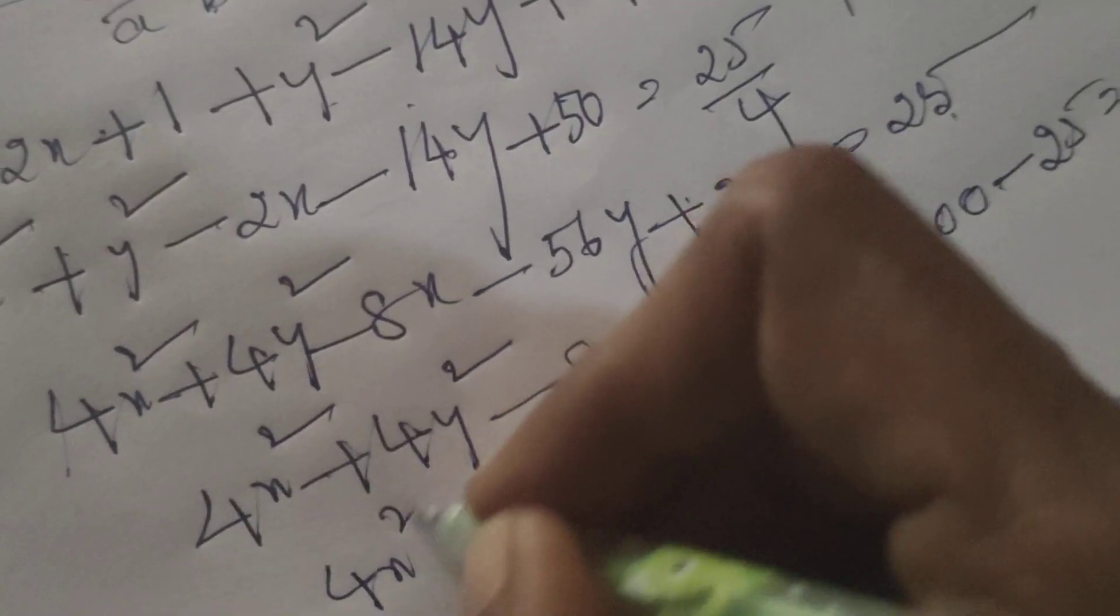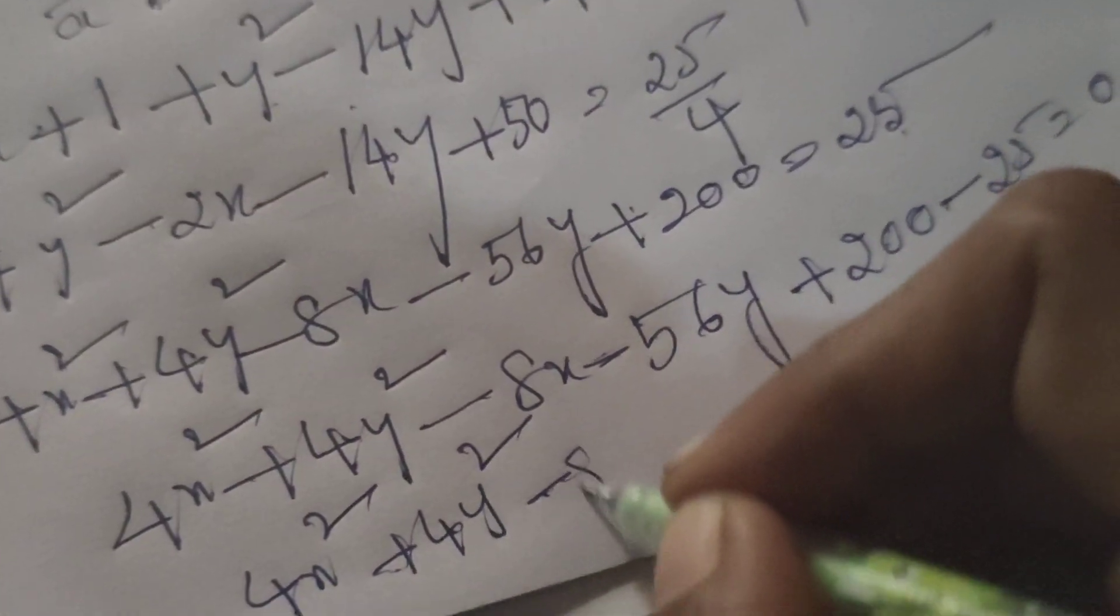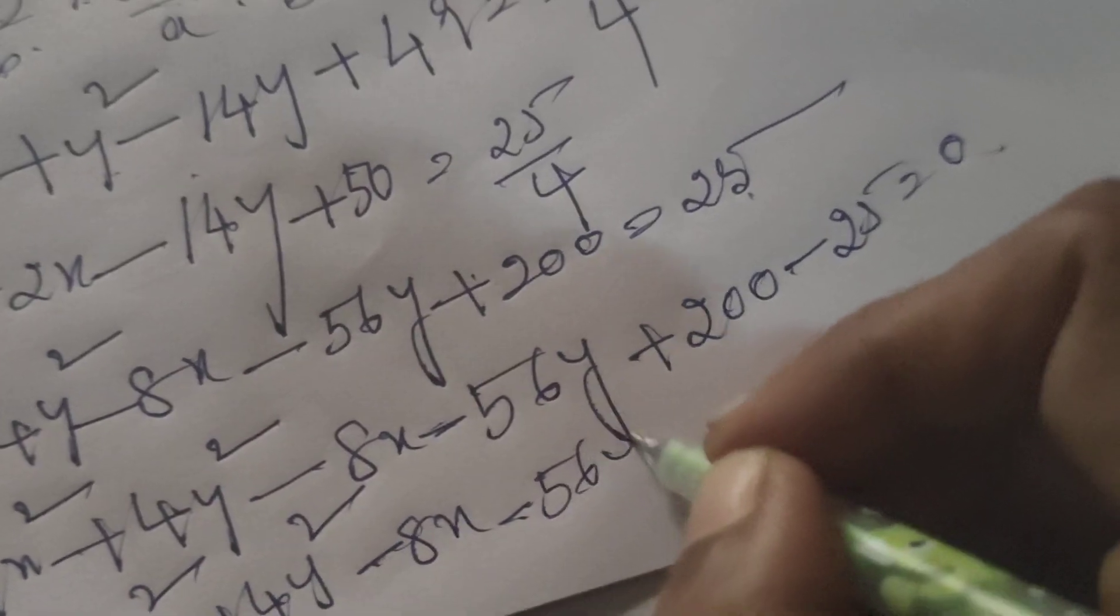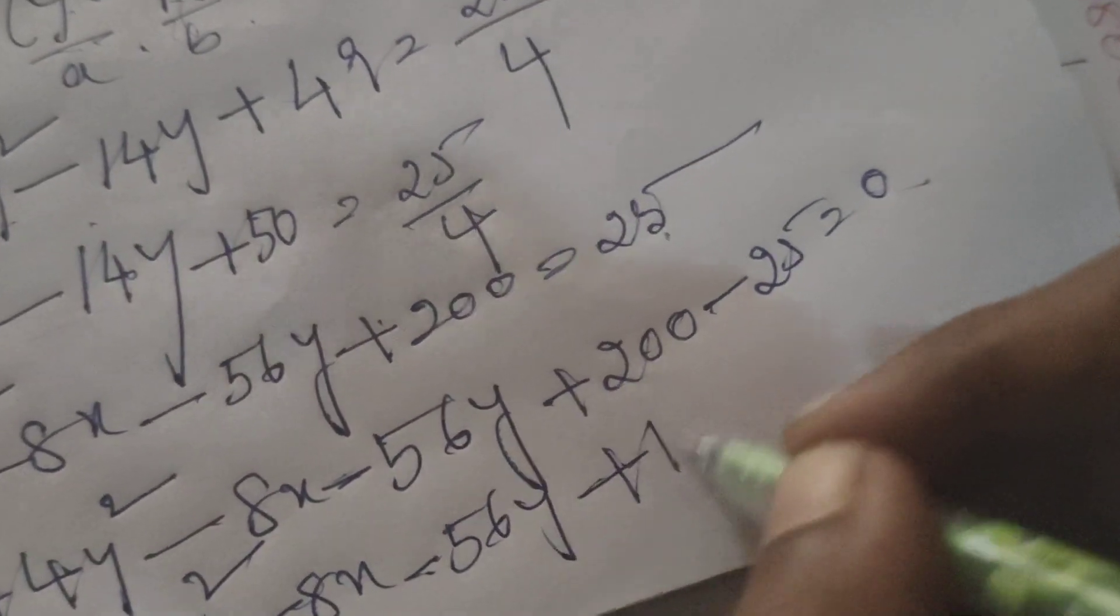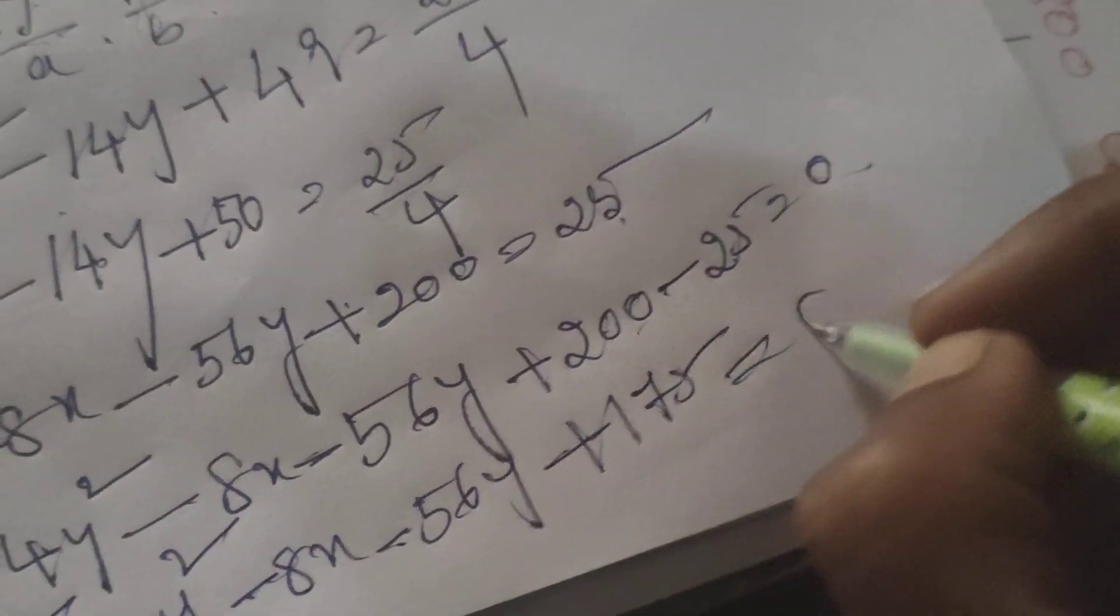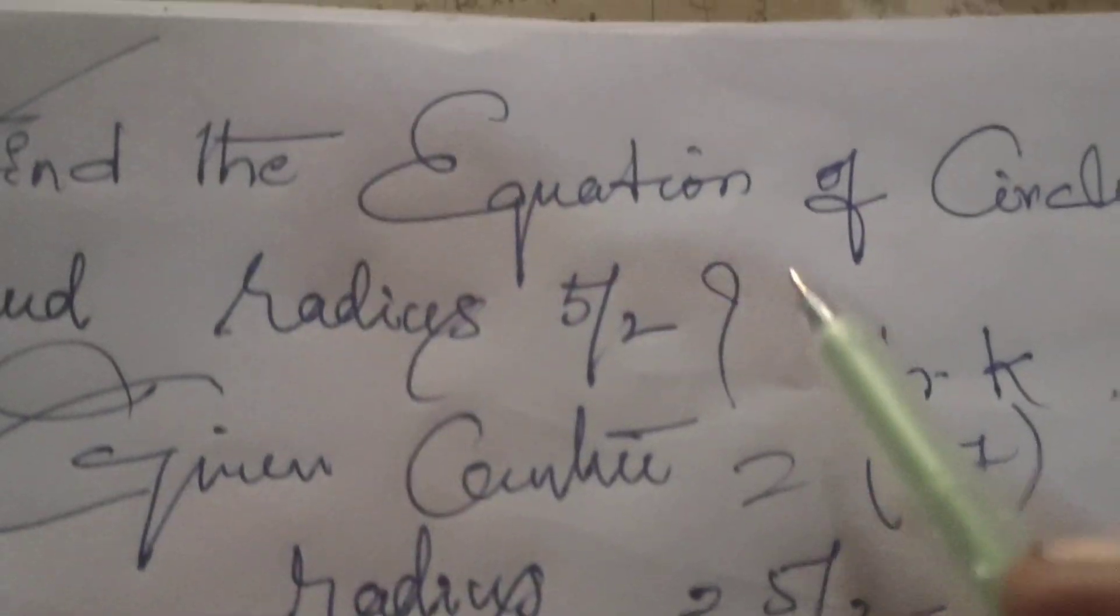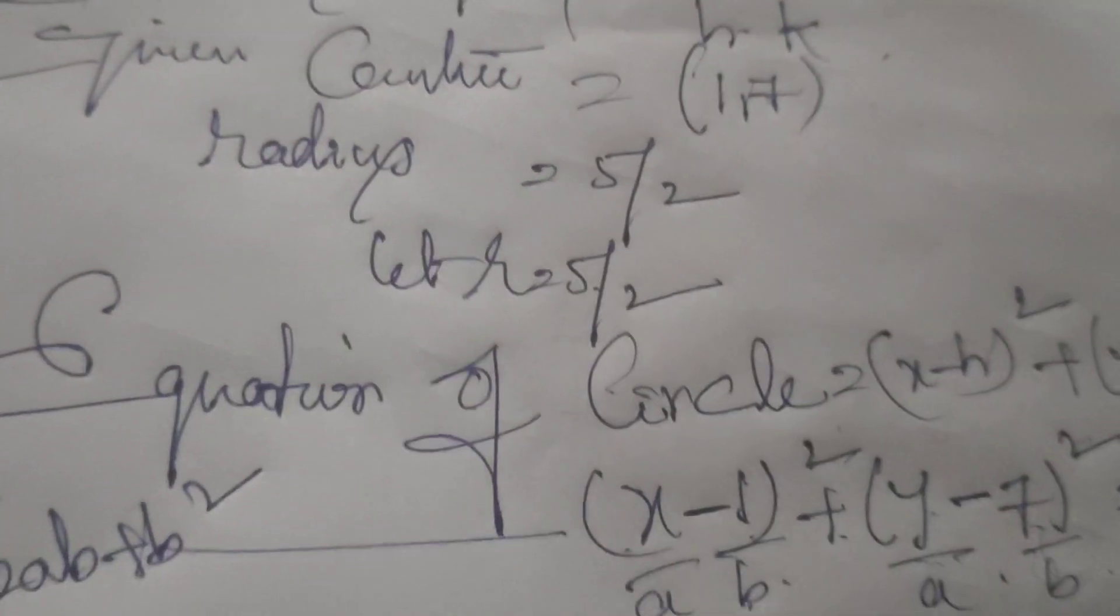Therefore, 4x² + 4y² - 8x - 56y plus 175, 200 minus 25 equals to 0. This is the equation of the circle by the given center (1,7) and radius 5/2.